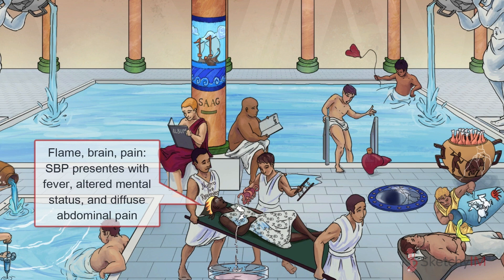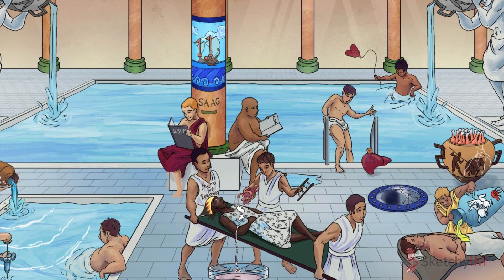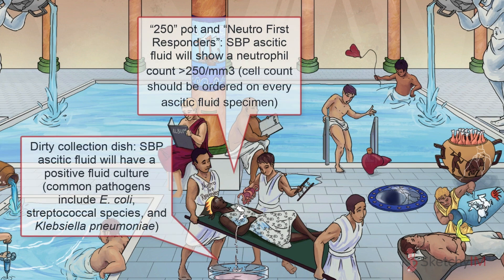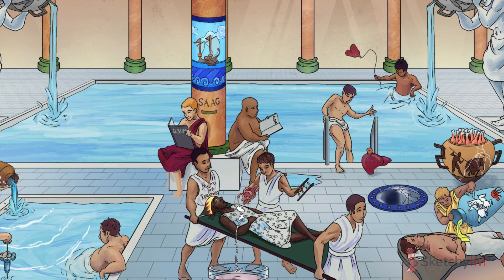A common complication of ascites in patients with cirrhosis is spontaneous bacterial peritonitis, or SBP, which occurs due to the infiltration of gut bacteria into the ascitic fluid. These patients present with fever, altered mental status, and diffuse abdominal pain. In the setting of SBP, the ascitic fluid may be turbid or cloudy rather than the usual translucent yellow appearance. A cell count with differential should be ordered on every ascitic fluid specimen, even for a therapeutic paracentesis. The diagnostic criteria for SBP includes a positive ascites fluid culture and a neutrophil count greater than 250 per milliliter.